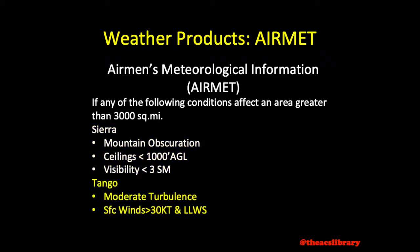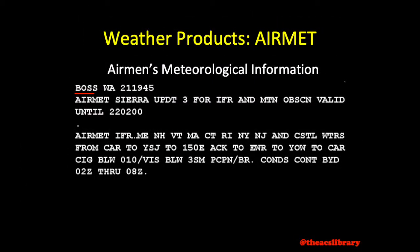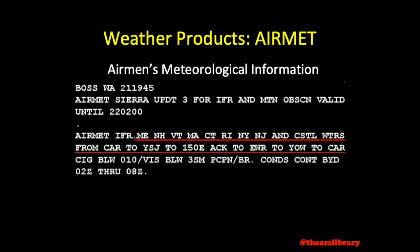Airmet Tango will be issued for moderate turbulence, sustained surface winds above 30 knots, or non-convective low-level wind shear potential. Airmet Zulu will be issued for moderate icing. The airmet also includes the area identifier, issuance time and end valid period, a description of conditions observed or forecasted — in this case ceilings below 1,000 feet and visibility below three statute miles caused by precipitation and mist continuing beyond 0200 Zulu through 0800 Zulu — and a list of states and VOR locations affected by the airmet.